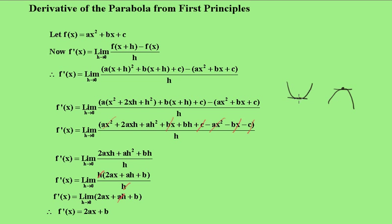Right? So we let that equal zero. So 2ax plus b equals zero.